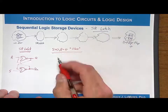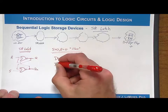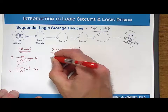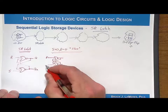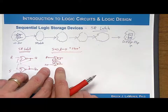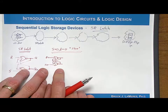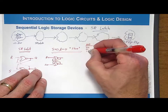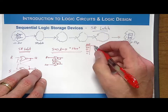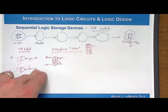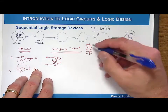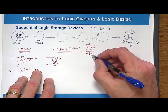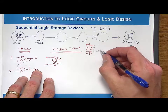Let's redraw our SR latch and put zeros on the inputs — R is equal to 0 and S is equal to 0 — and ask what is it going to store. We want to look at the truth table for a NOR gate. The inputs are 0-0, 0-1, 1-0, and 1-1, and the outputs are 1, 0, 0, 0. The only time you ever have a 1 is when you have both inputs as 0; you will always have a 0 when any input has a 1.